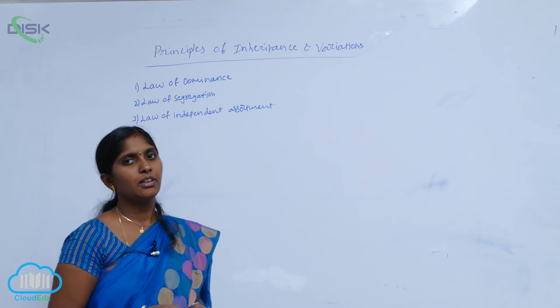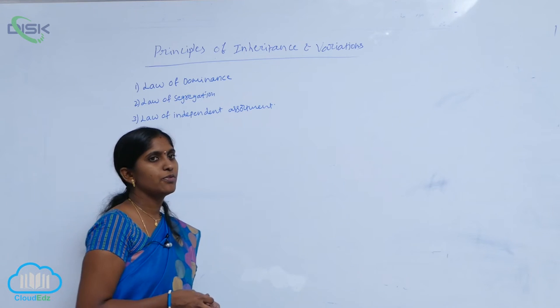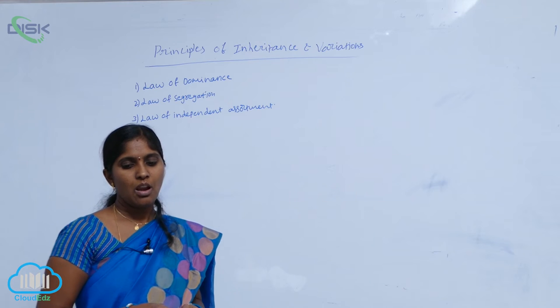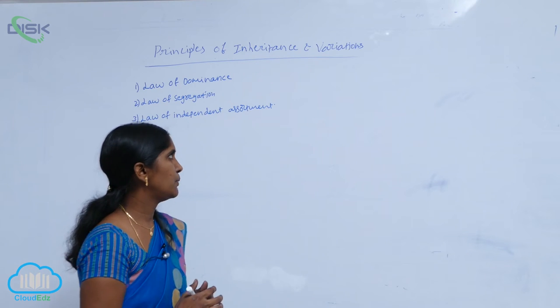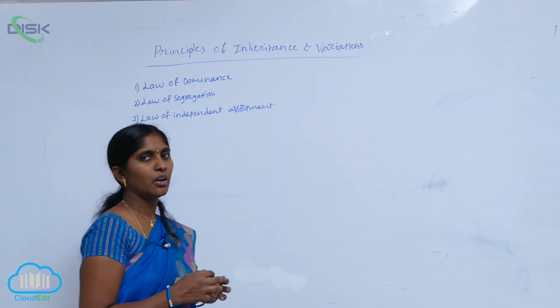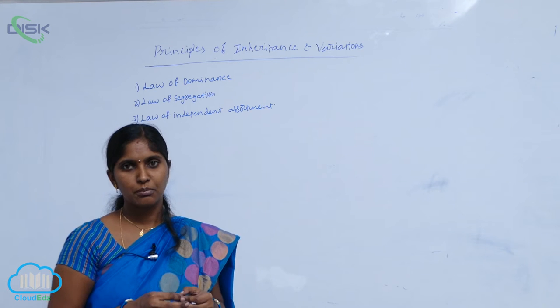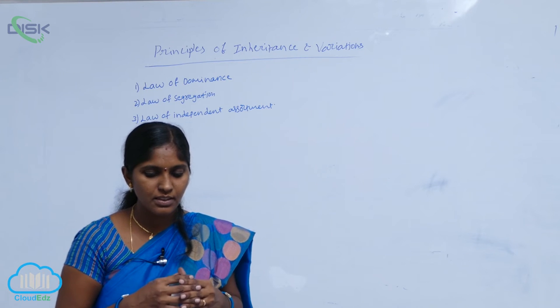Second principle of inheritance, law of segregation. Law of segregation is dependent on the monohybrid cross. It developed from the results of monohybrid cross.